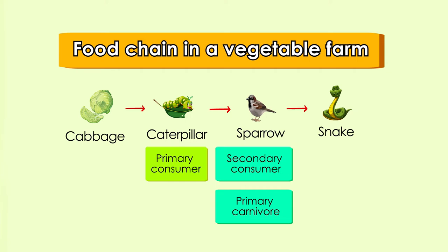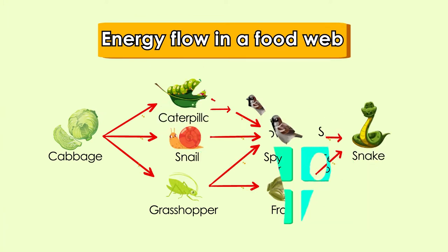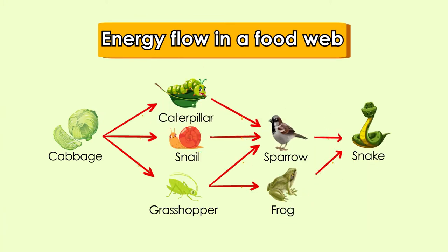The third consumer in a food chain is called the tertiary consumer. Tertiary consumers are secondary carnivores that eat the secondary consumers. They are usually bigger in size compared to the primary or secondary consumers. Examples of tertiary consumers are snakes, foxes, and eagles. Energy is transferred from the sun to the producer, then to the primary consumer, followed by the secondary consumer, and finally the tertiary consumer.